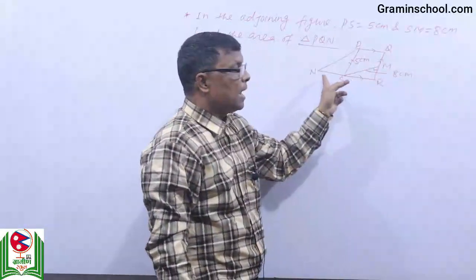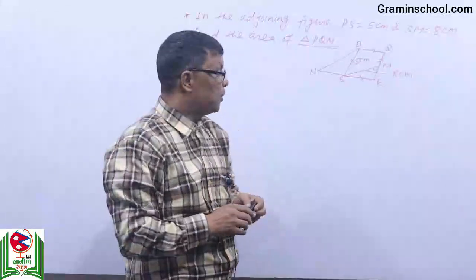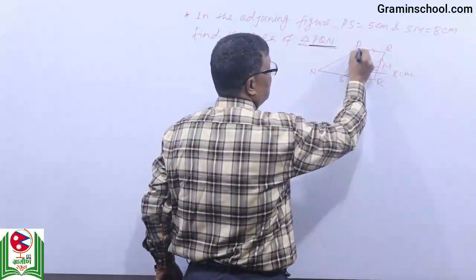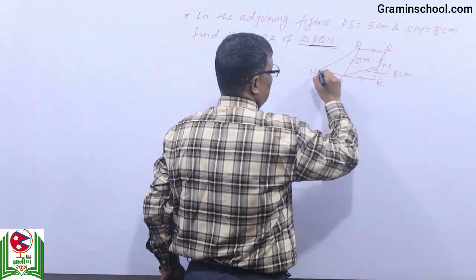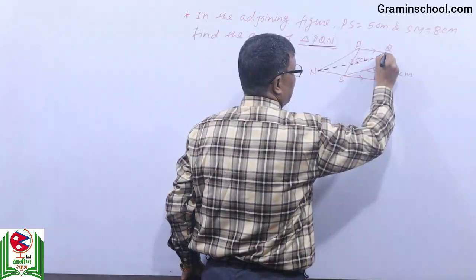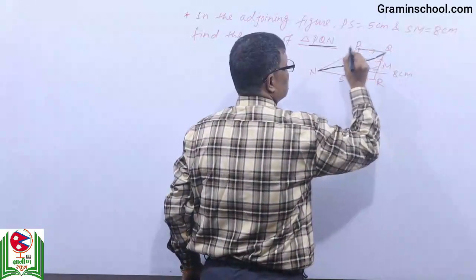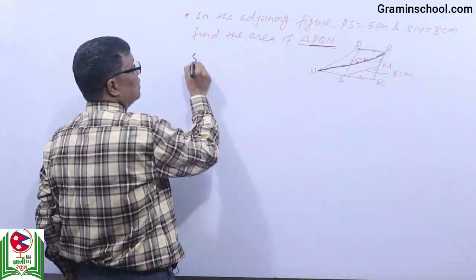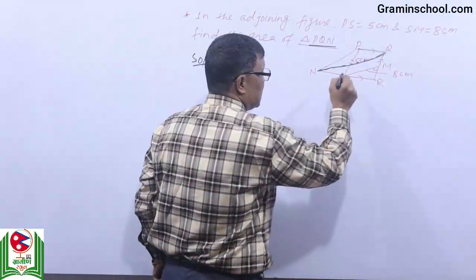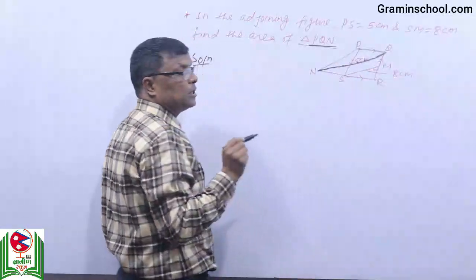Here we should go with two points and we will have triangle PQN over here. So we will have PQN triangle over here. So we will have construction here for triangle PQN.